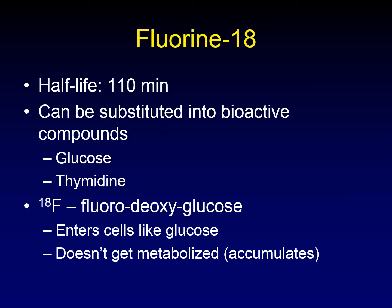What we're detecting in positron emission tomography is actually those two photons going simultaneously at high energy in two opposite directions, completely 180 degrees from one another. Fluorine-18 has a half-life of about two hours, which is convenient because that's a relatively long half-life as unstable atoms go.